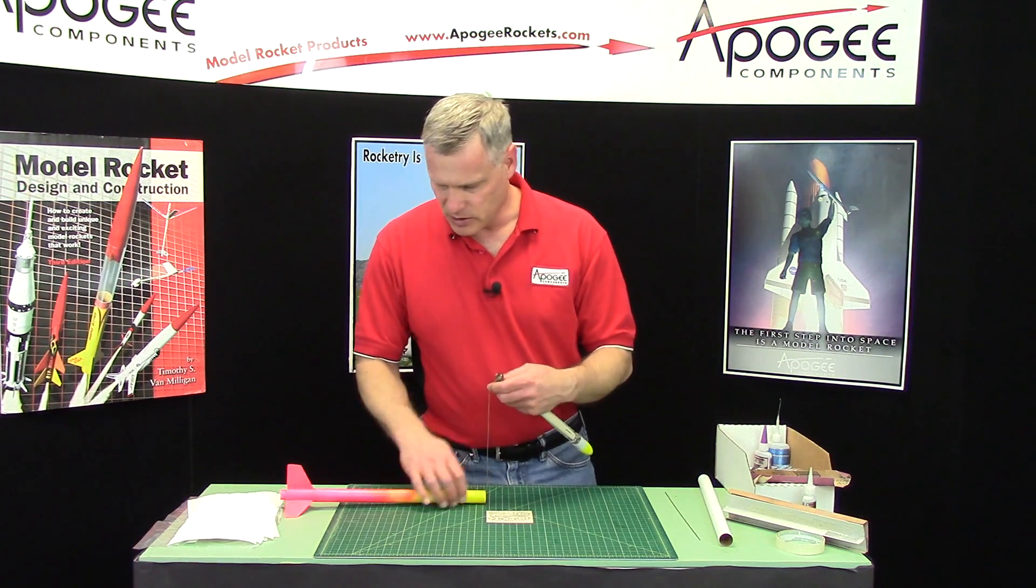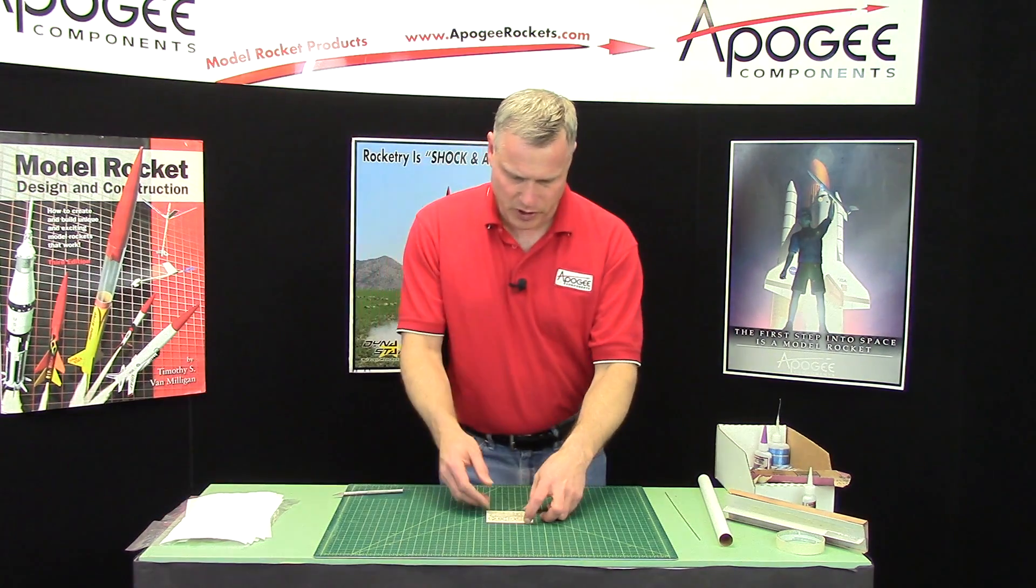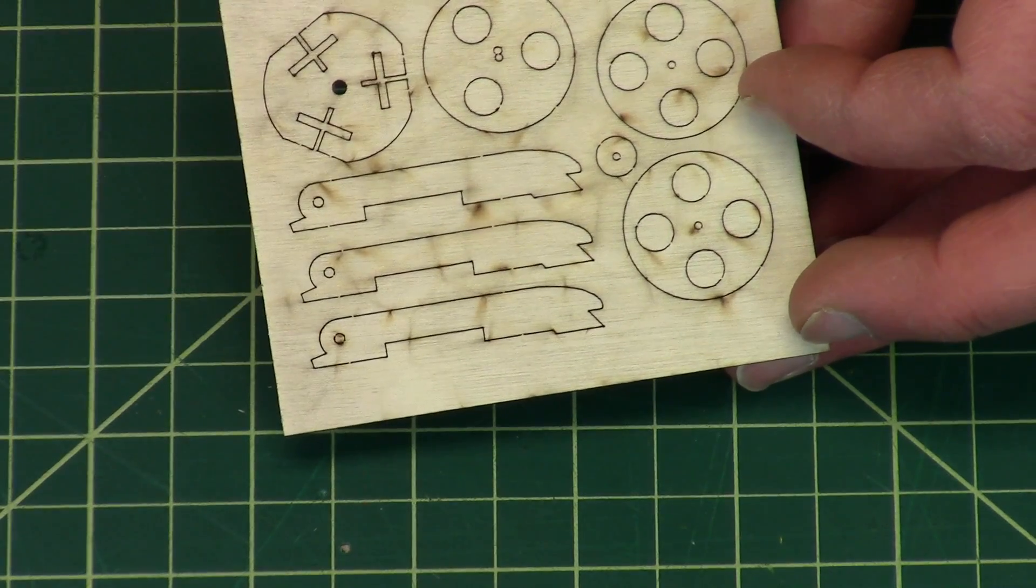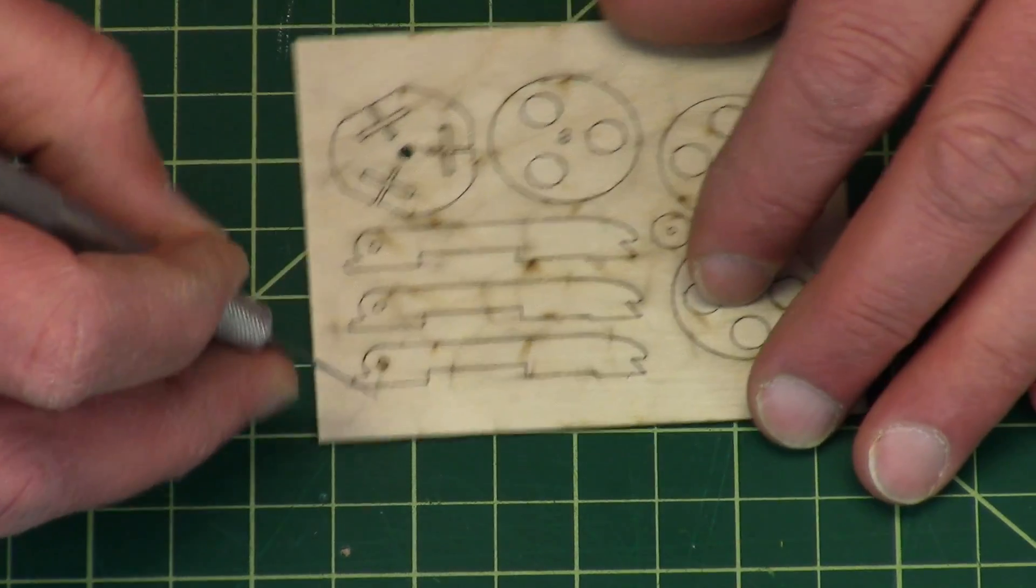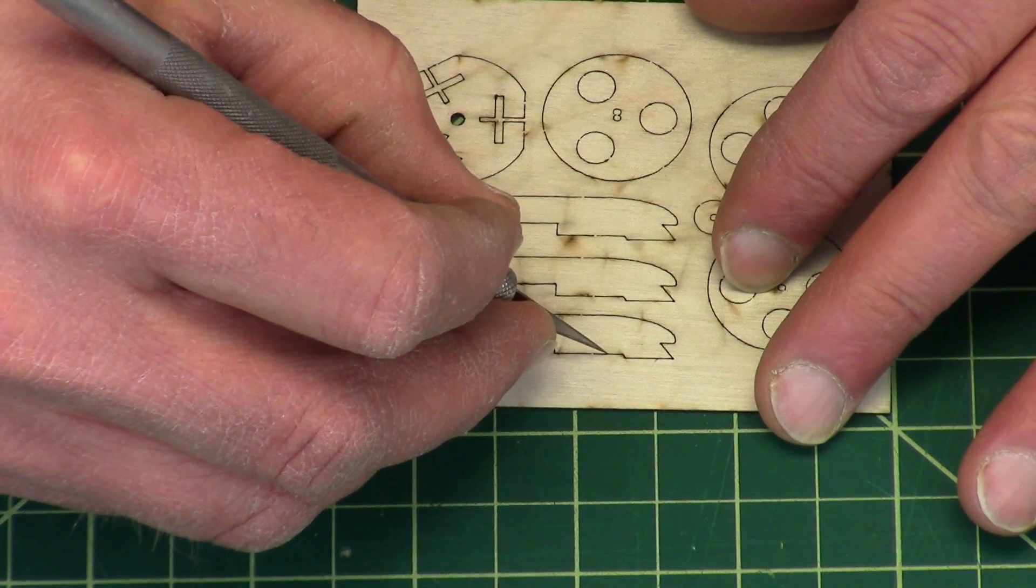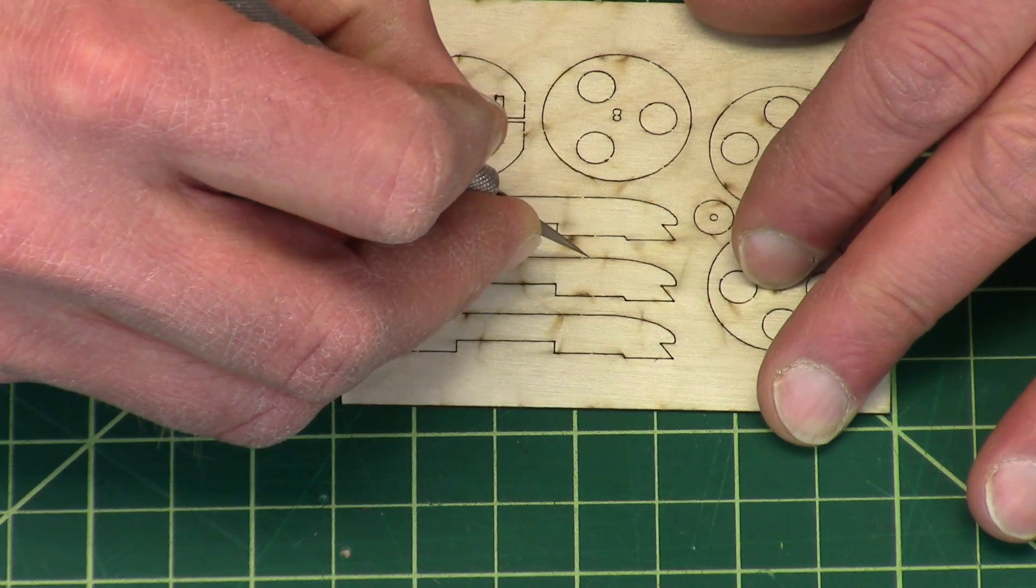Go ahead and flip it over and make sure it's cut through all the way with the laser. If it's not, take your hobby knife and run it along the perimeter to break the little ticks, and everything should pop out really nicely.